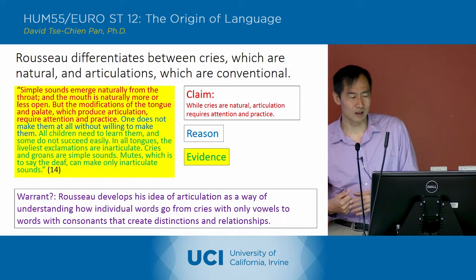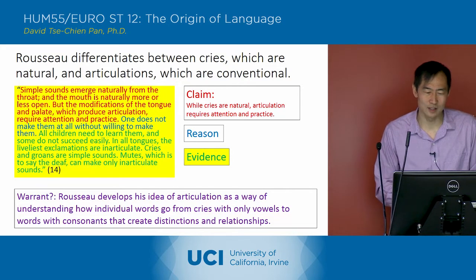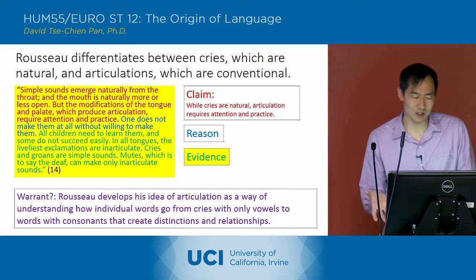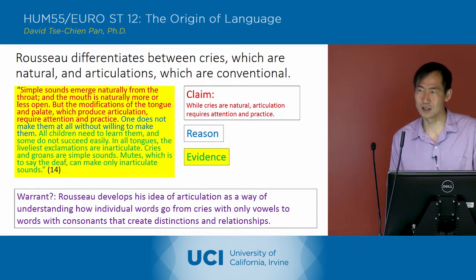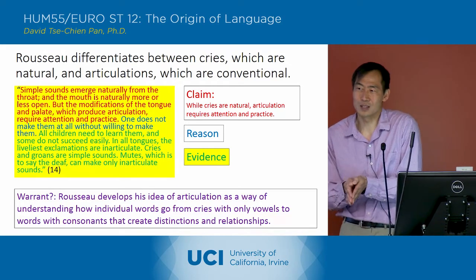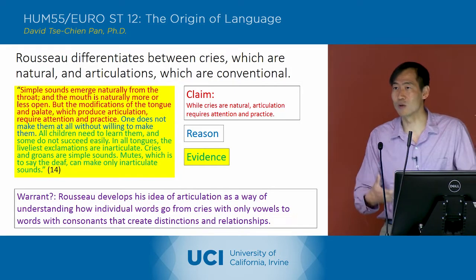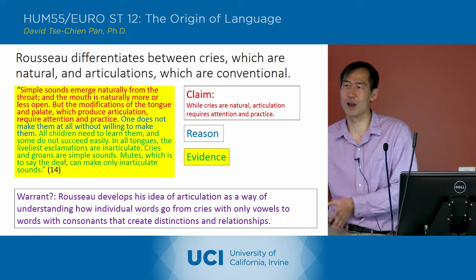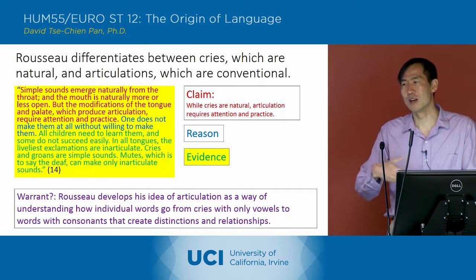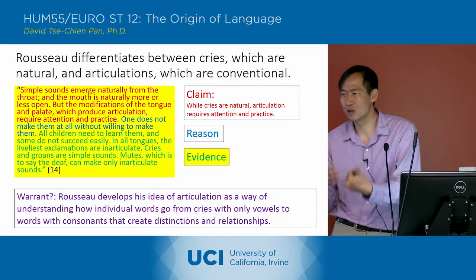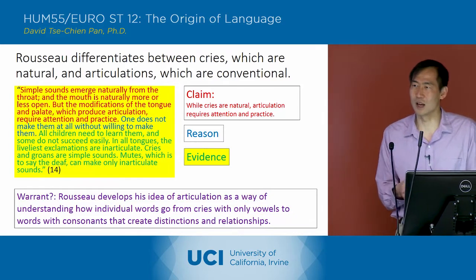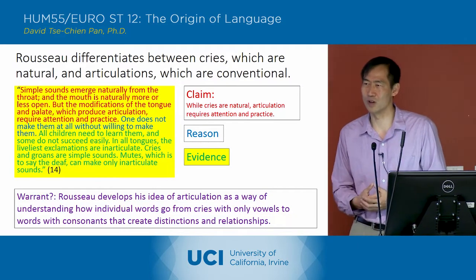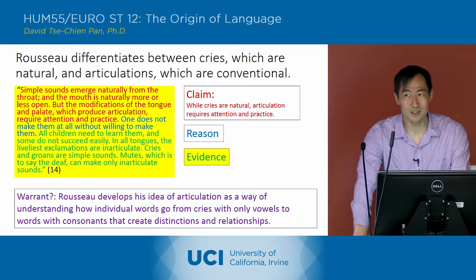He doesn't provide us with an explicit warrant here, but what I'm indicating as his warrant is that he sees articulation as the way language develops from cries into words with consonants and distinctions and relationships. The warrant is really a continuation of the idea that language begins as passion and turns into a kind of rationality — the initial passion is the cry, and then as you become rational, you work hard, pay attention, and add these articulations and consonants.